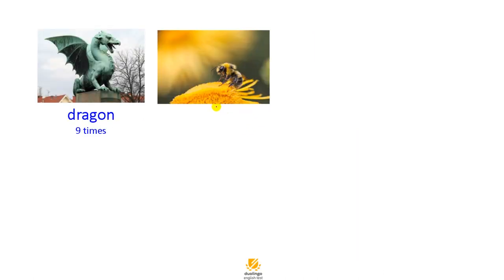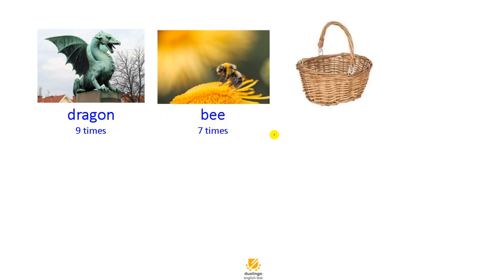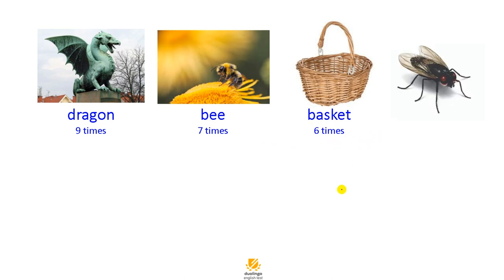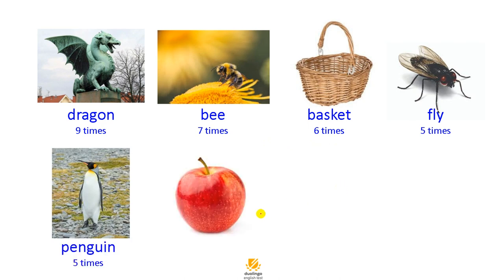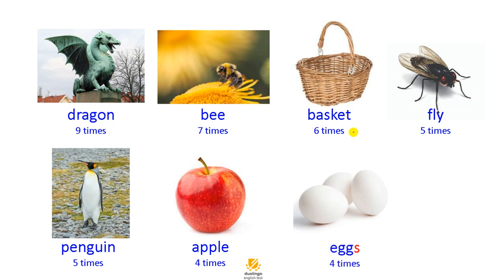The first word we have is dragon, with nine times repetition. The third one is basket — it is a basket with six times repetitions. We also have fly, a penguin, apple, and eggs. The point here is that when the picture is plural, we have to say it in plural way. As you see here, eggs with S.